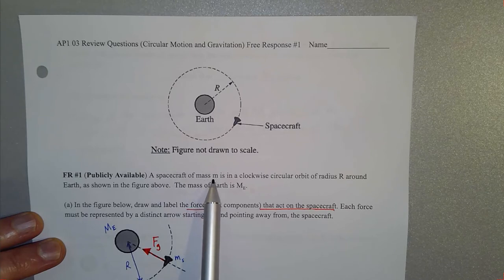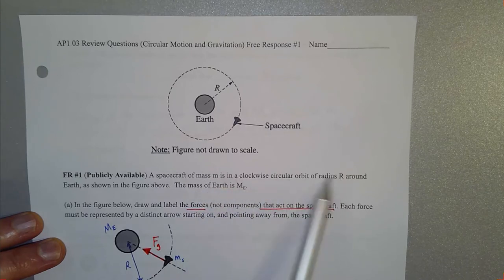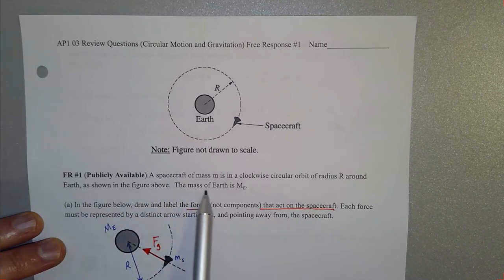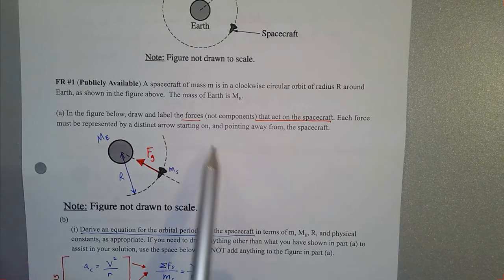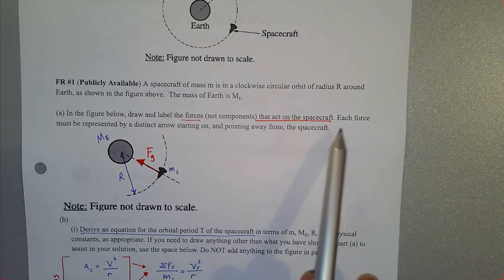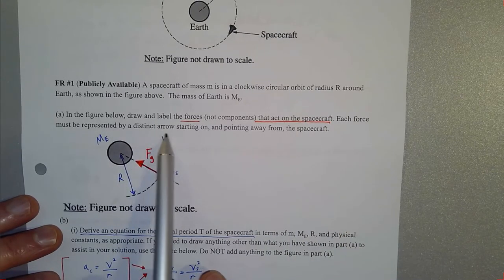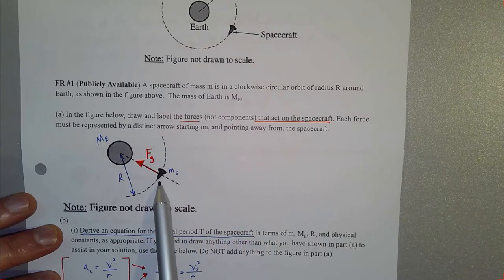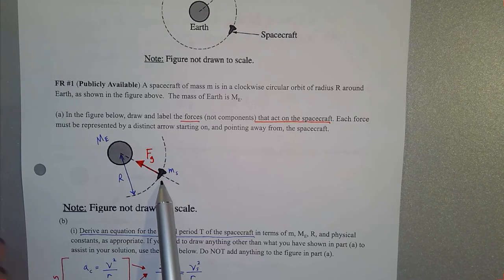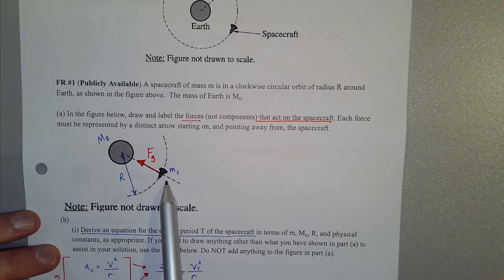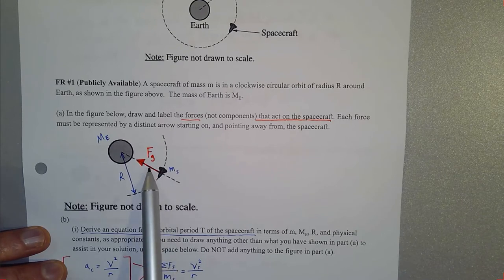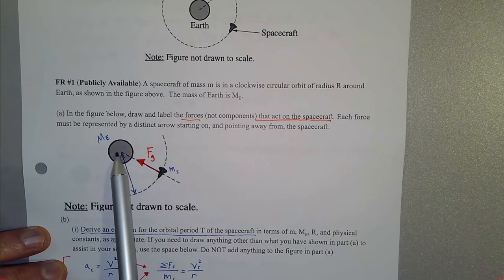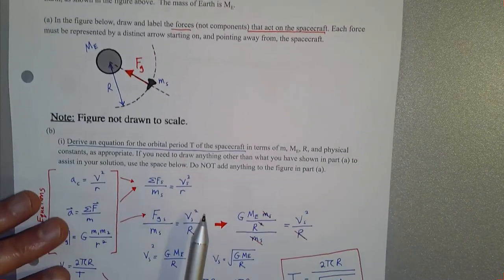The question: a spacecraft of mass M is in a clockwise circular orbit of radius capital R around Earth, as shown in the figure. The mass of the Earth is capital M sub E. Part A asks us to draw and label the forces — not components — that act on the spacecraft. Since the spacecraft is well beyond the atmosphere, there's no frictional effect from the air. The only significant force is the gravitational force of attraction pulling the spacecraft toward the center of the Earth.